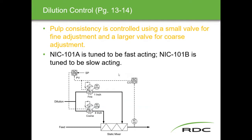For dilution control, pulp consistency is controlled using a small valve for fine adjustment and a larger valve for coarse adjustment — similar arrangements appear with pH control as well. Controller 101A is tuned to be fast-acting, while 101B is tuned to be slower-acting for dilution control, using a consistency transmitter.